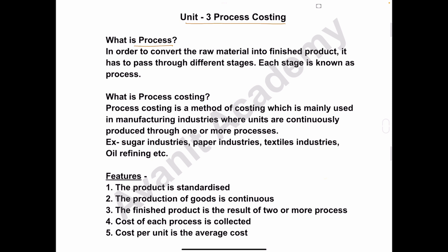In order to convert the raw material into finished product, it has to be passed through different stages, and each stage is called a process. Next we'll see the meaning of process costing. Process costing is the method of costing which is mainly used in manufacturing industry where units are continuously produced through one or more processes.